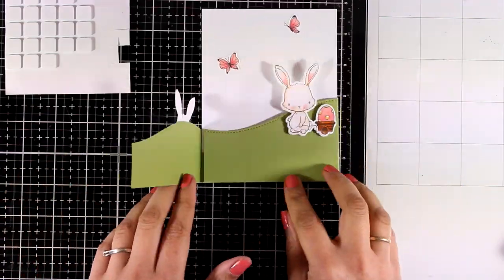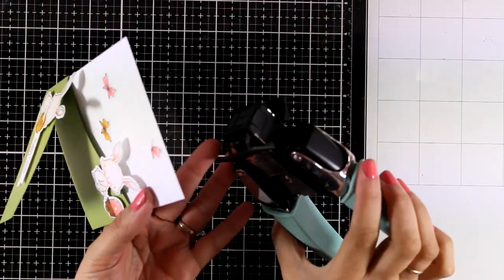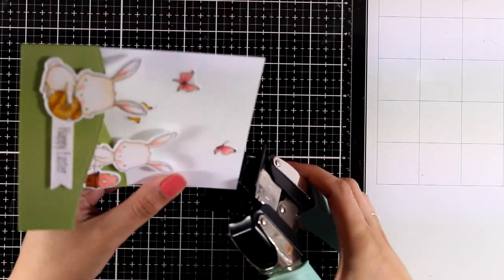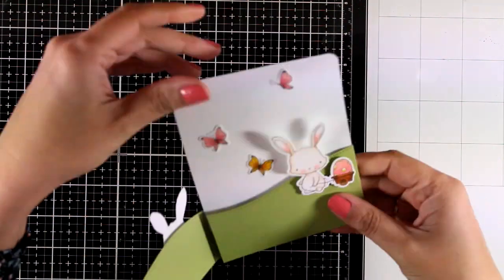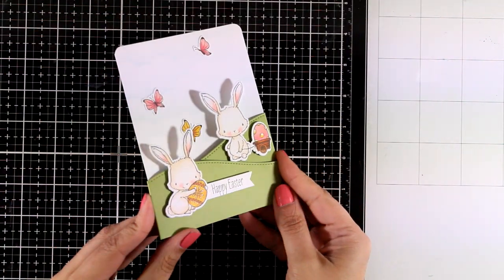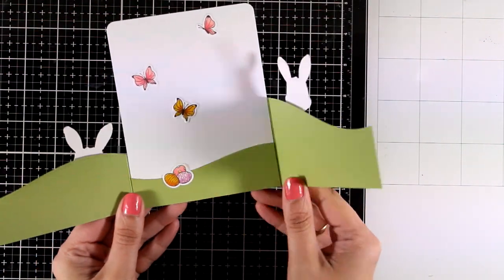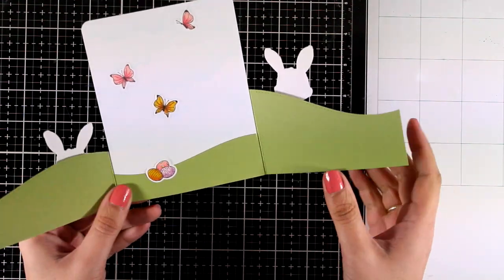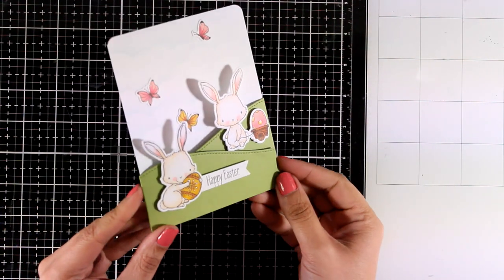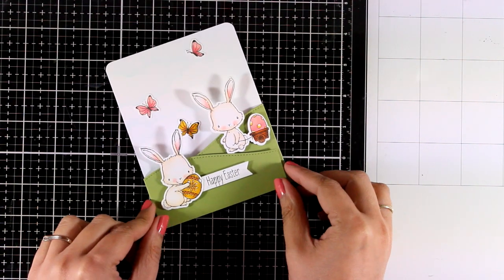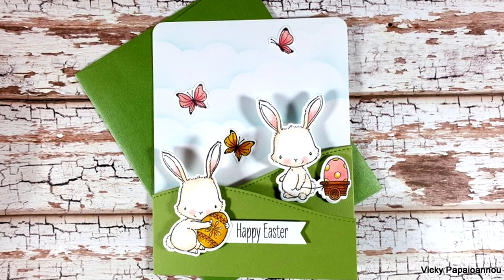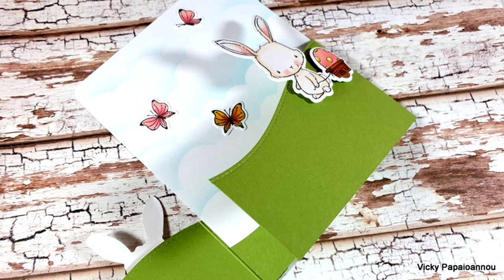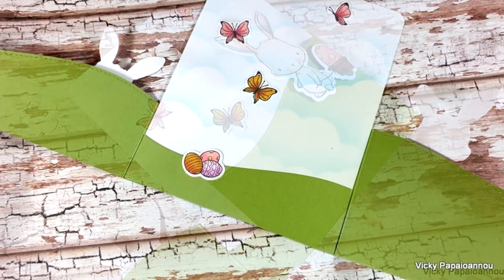For the sentiment I went with Happy Easter, which is one of the sentiments included in the same stamp set as the bunnies. I stamped it on white cardstock, cut it out with a die that has a fishtail on one end, and just tucked it down. Finally I used my corner rounder to round the top edges since this is the front and the inside of my card. It's a really adorable card perfect for wishing Happy Easter, and here are some close-up photos.